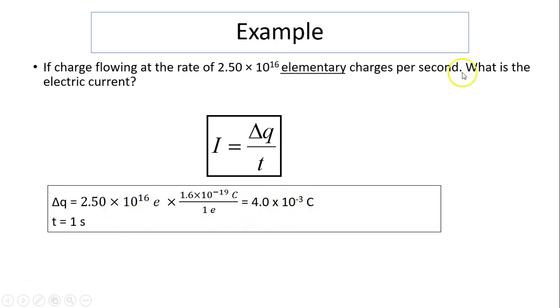T is per second, means T is one second, so I is just 4.0 times 10 to the negative 3 amperes, or 4 milliamperes.